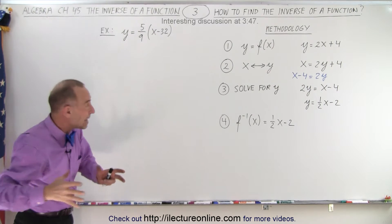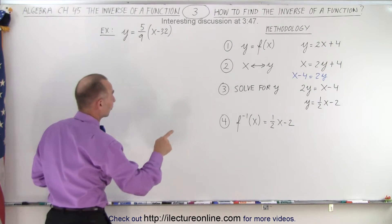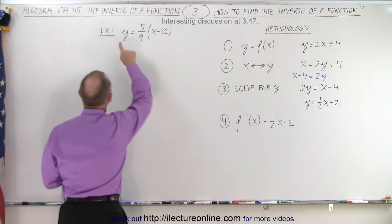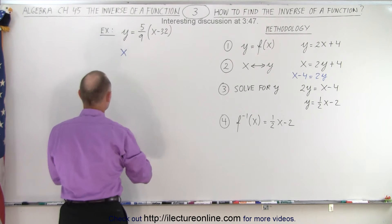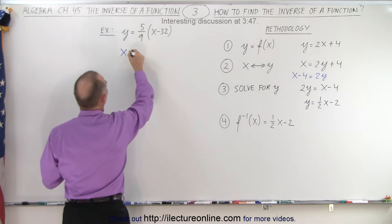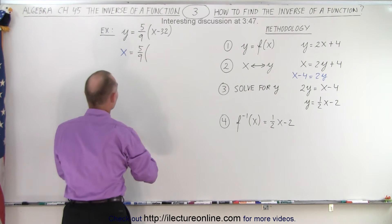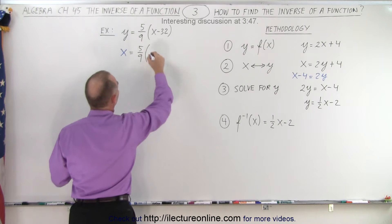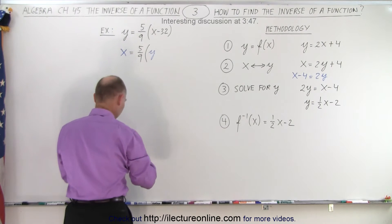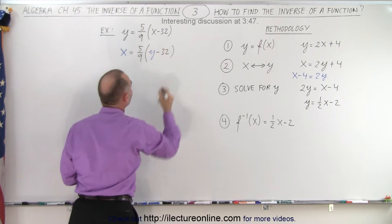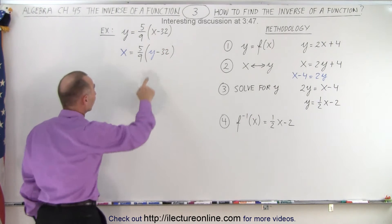And now we want to find the inverse of that function. So the first thing we do is we replace every x by y. So what we're going to do is this y now becomes an x. This is equal to 5 over 9 times and this x now becomes a y. And minus 32. All right now I have to solve that equation for y.